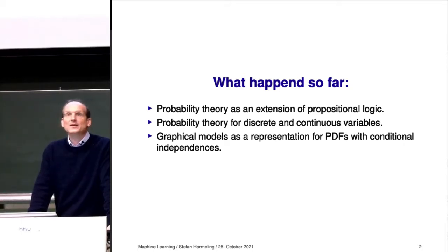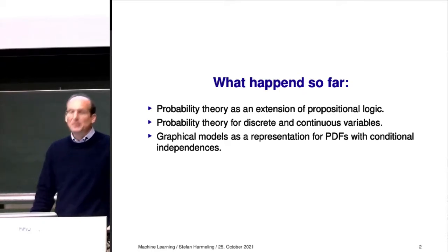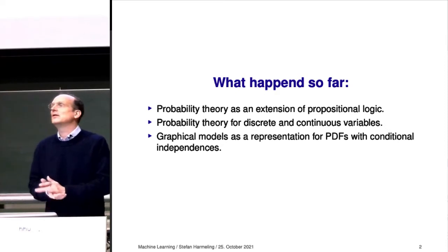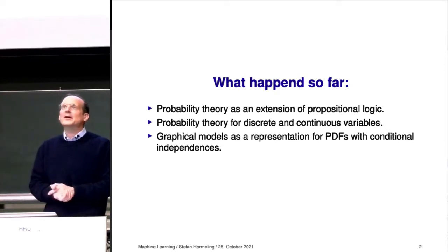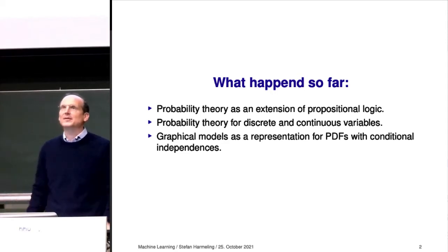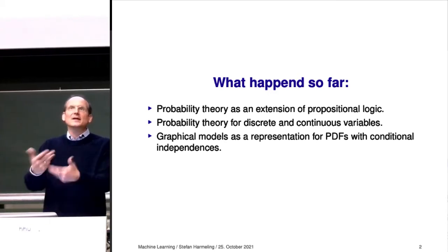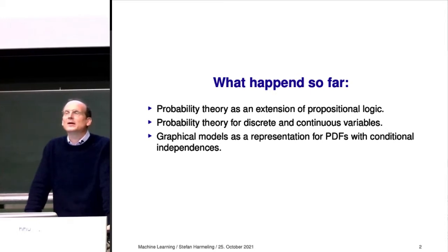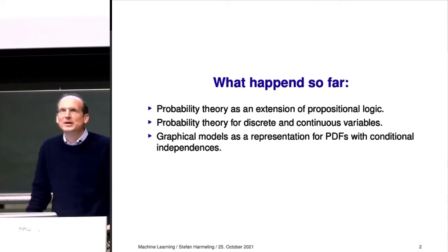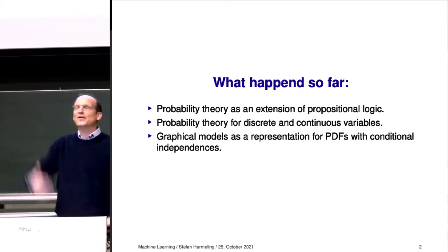We looked at graphical models as a representation for probability density functions or probability mass functions that have certain conditional independencies. These graphical models are tools by themselves — expert systems are an interesting topic in AI, and you can build expert systems with these graphical models. It's very nice to have probabilities in there as well. Otherwise, when you look at these expert system websites for printer problems, they ask you trivial questions first.